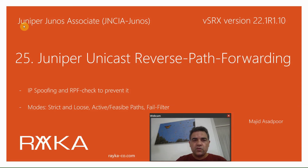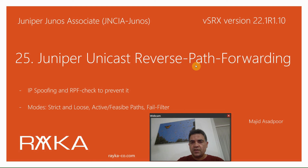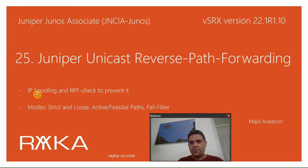Welcome to another video of Juniper Journal's Associate course. In this section, I will talk about Juniper Unicast Reverse Path Forwarding feature, which is used to prevent IP spoofing attacks.